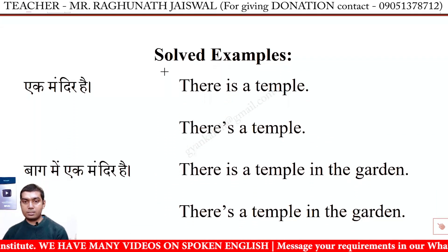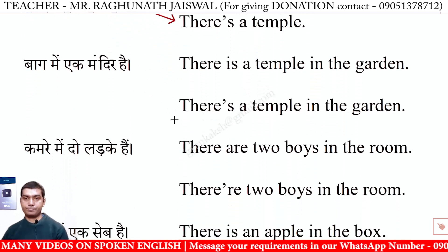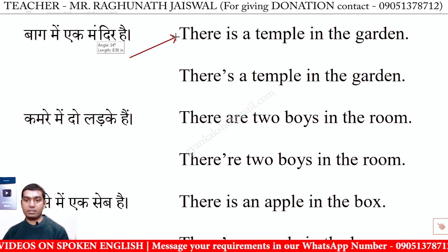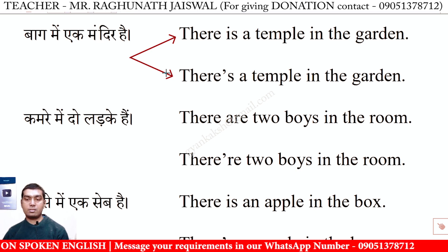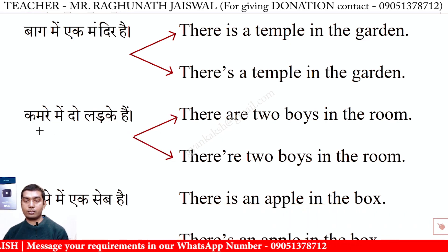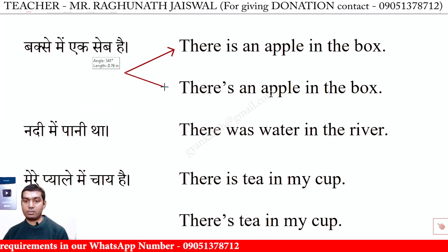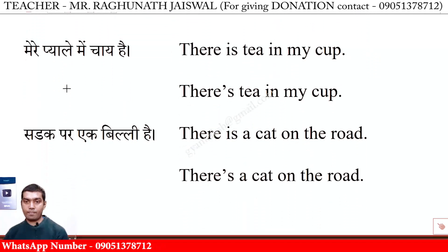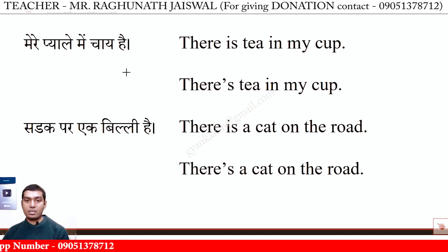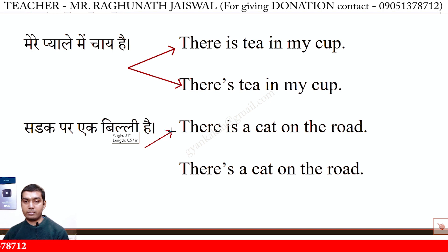Kuch aur solved examples dekhiye. Aek mandir hai — There is a temple. Baag mein ek mandir hai — There is a temple in the garden. Kamre mein do laadke hai — There are two boys in the room. Baagse mein ek seb hai — There is an apple in the box. Nadhi mein paani tha — There was water in the river. Mere pyaale mein chai hai — There is tea in my cup. Sadaak par ek billi hai — There is a cat on the road.